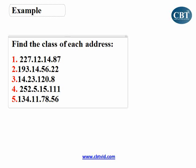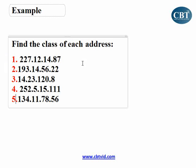Here are some examples to see if we understood how to find the class of an IP address. I've got five different addresses and we're going to find out what class they belong to: 227.12.14.85, 193-something, 14, 252, and 134. I recommend that you pause this video, solve the problem, find out the class of these addresses, and then continue with the answer.